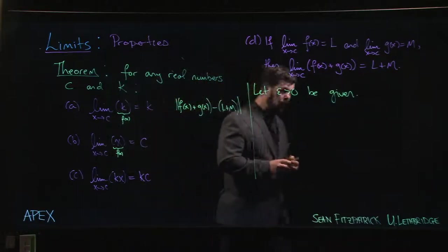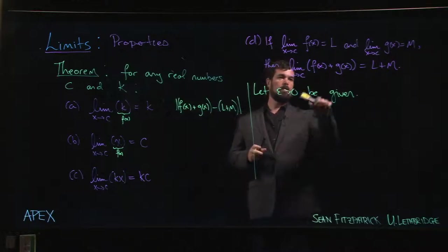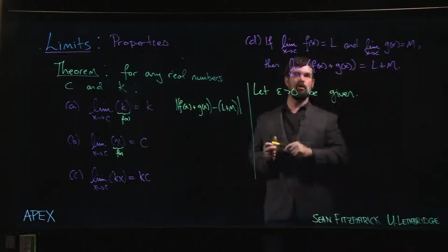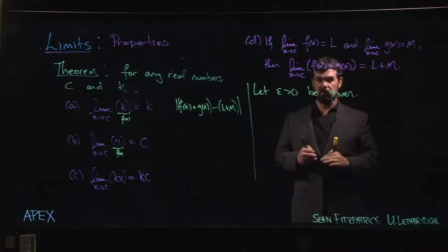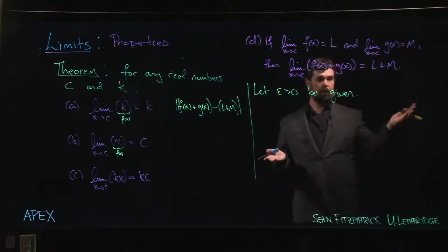We're looking at our function; the function we're dealing with here is the sum of these two functions. The limiting value is the sum of the limits. Limit of a sum is sum of the limits, makes sense.